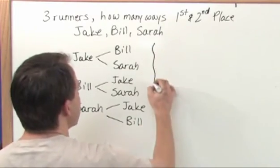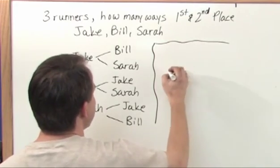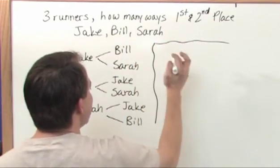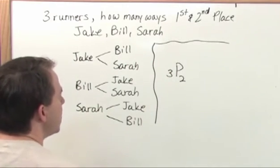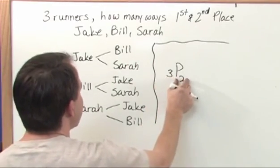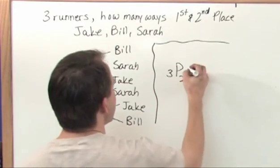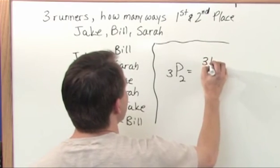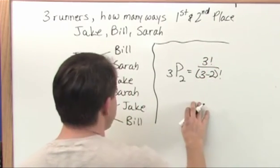And then we said in the last section that when you have problems of this type, you have in this case three elements taken two at a time. Because I have three elements but I'm only looking at the number of ways in which two of them can be ordered where the order does matter. And we said that was three factorial over three minus two factorial.